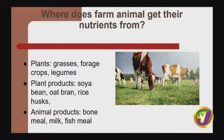From plant sources, animals get nutrients from grasses, forage crops, and legumes. From plant products such as soya beans, oat bran, and rice husk, just to name a few. And from animal products such as bone meal, milk, and also fish meal.